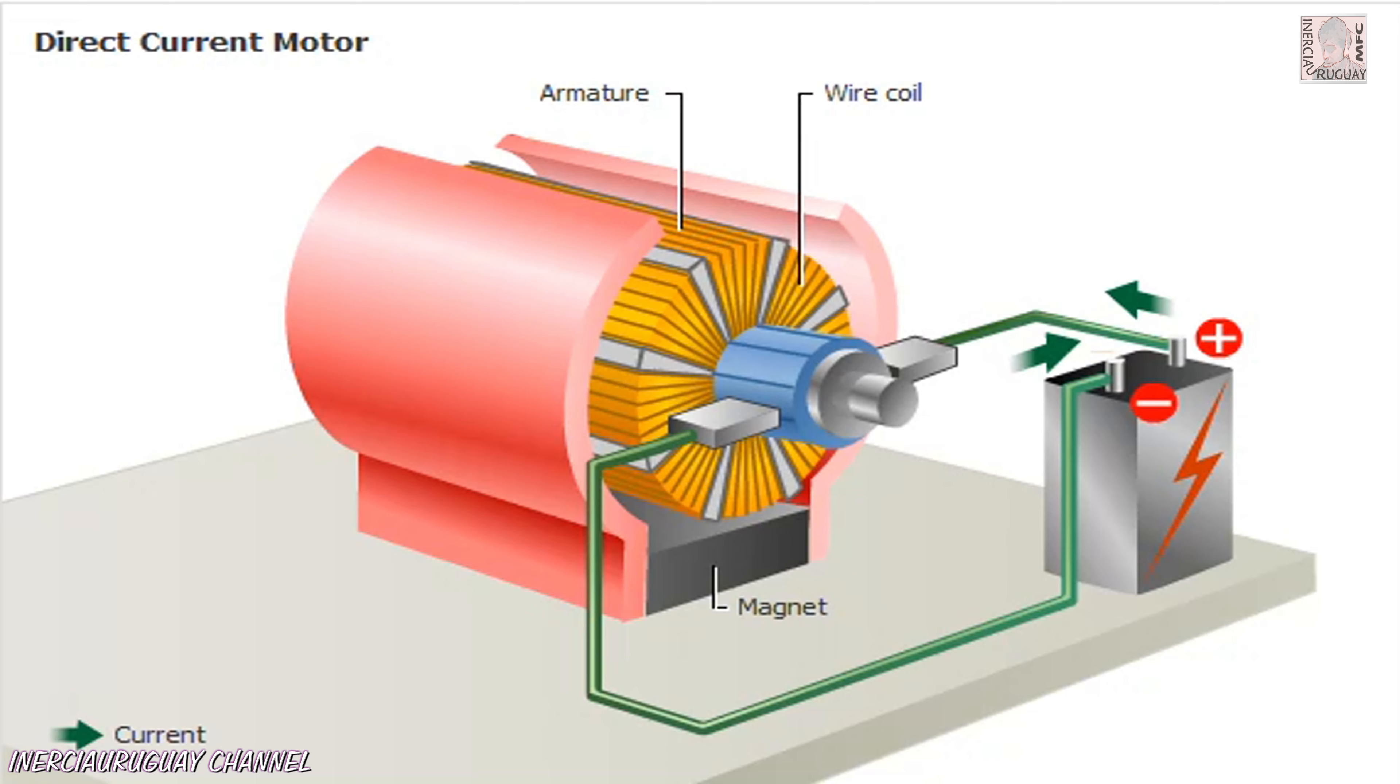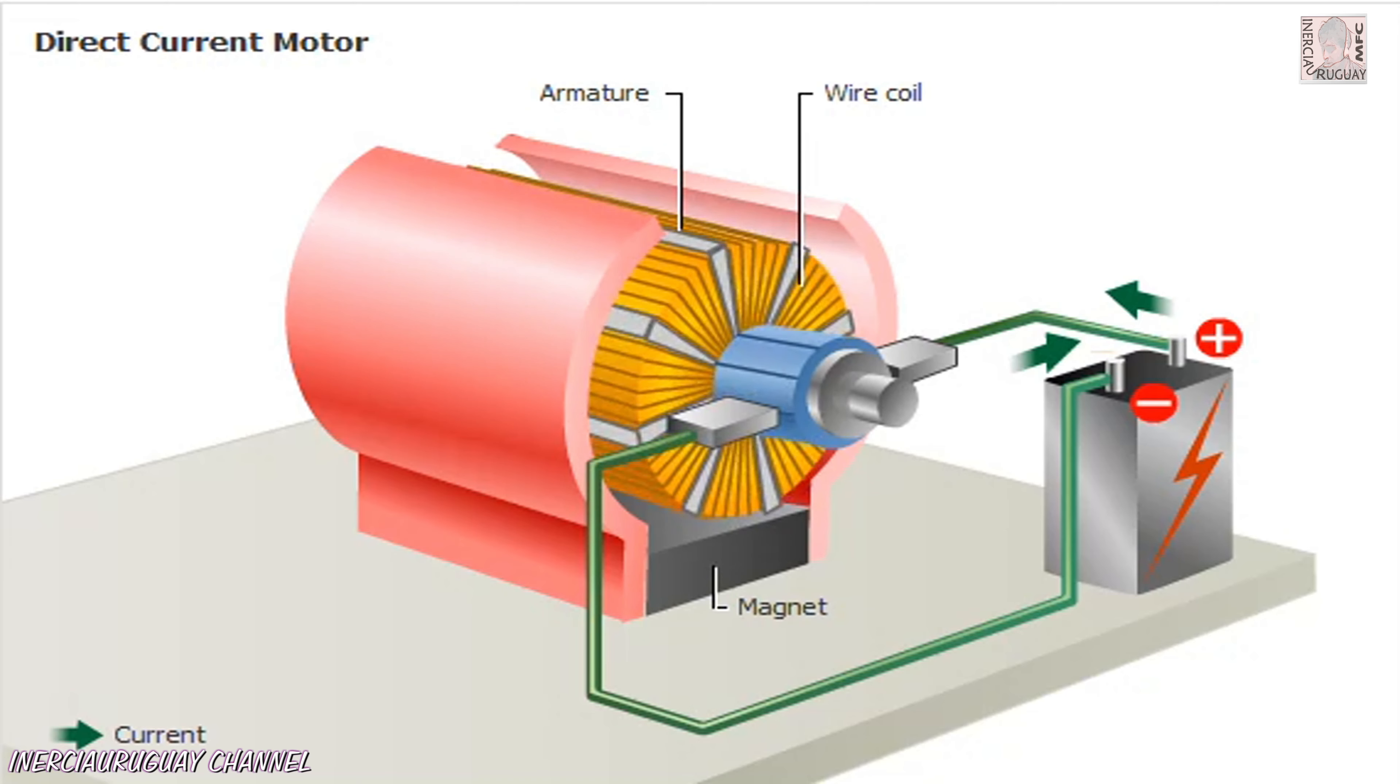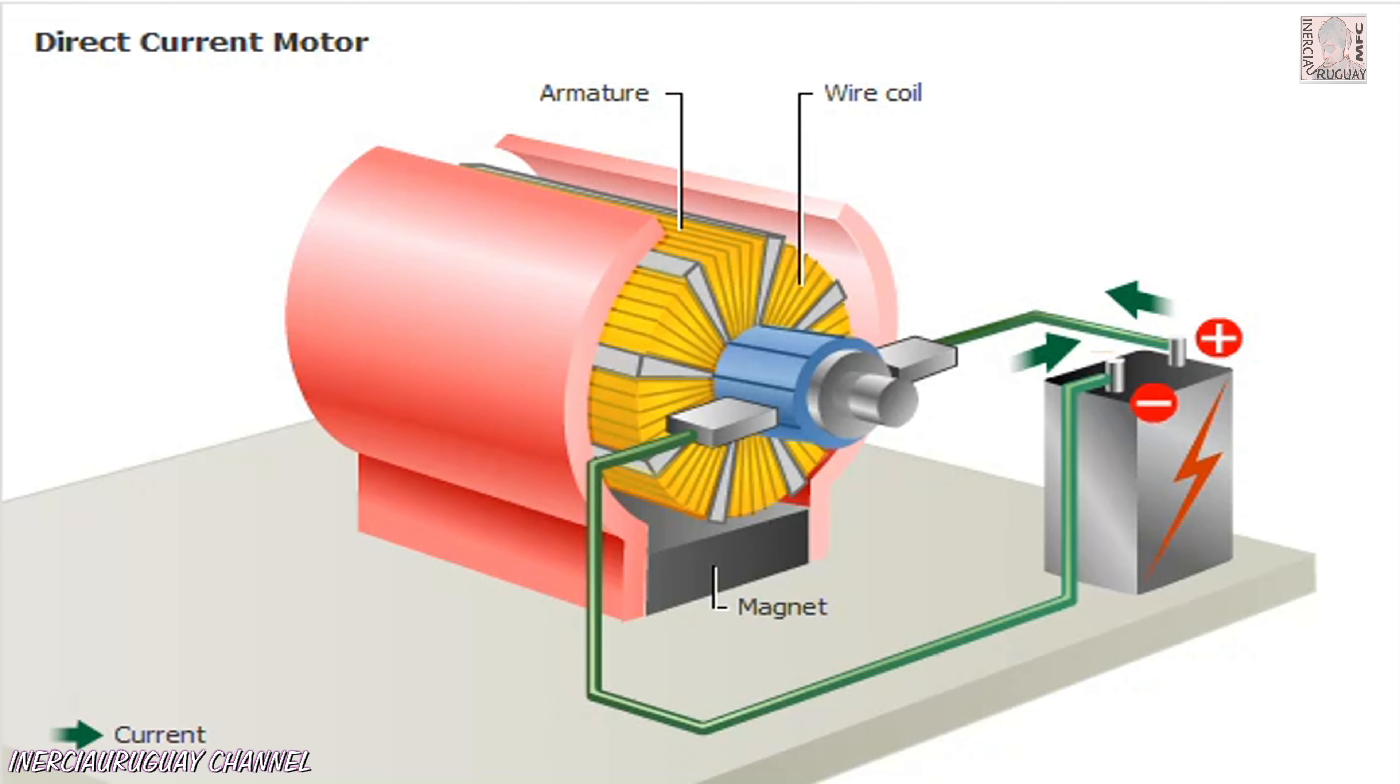A DC motor consists of an armature that rotates within a magnetic field. The armature has a coil of wire wrapped around an iron core.